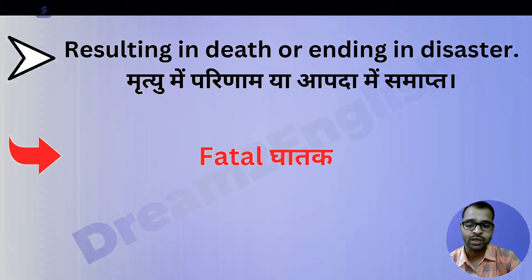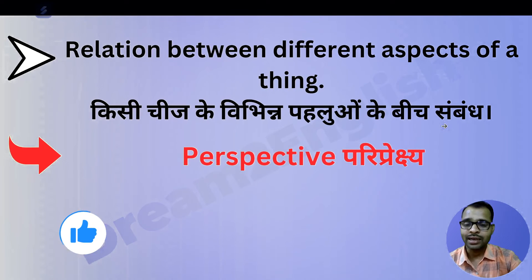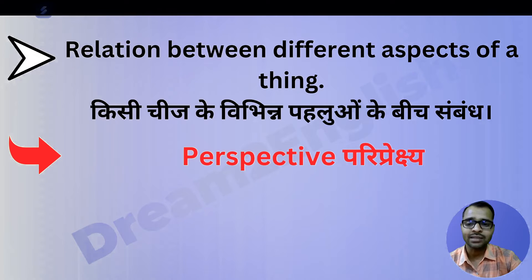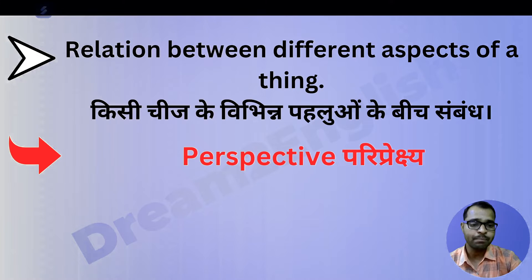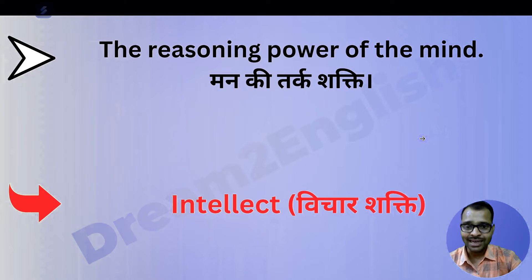Resulting in death or ending in disaster is called 'fatal' — ghatak. Next one is relation between different aspects of a thing — kisi cheez ke vibhinn pahaluon ke beech sambandh — this is called 'perspective' — paripreksh.